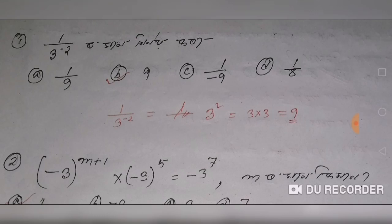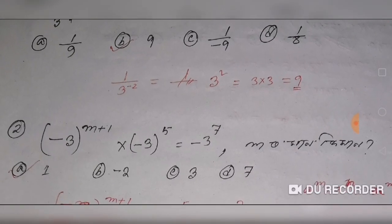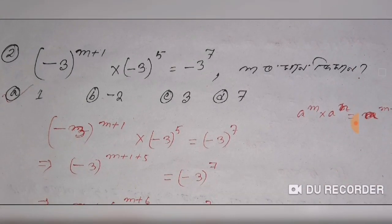Today I have a question about 1 by 3 to the power minus 4. This question is 1 by 3 to the power minus 2, and 3 squared. The episode is M plus 1 into minus 3 to the power of 5 equal to minus 3 to the power of 7.